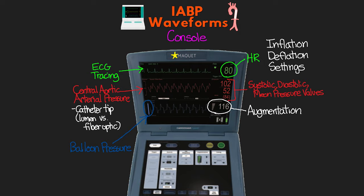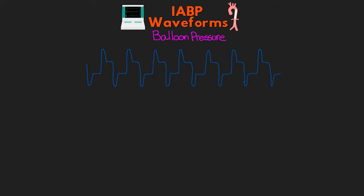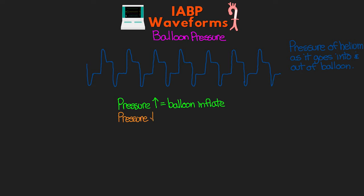Let's talk about our balloon pressure. This waveform represents the pressure of the helium as it goes into and out of the balloon, causing it to inflate and deflate. In a lot of ways, it reminds me of the pressure graph on a ventilator — it's measuring the pressure at any given time, giving us a waveform representing those pressures in the balloon over time. As the pressure increases, the balloon inflates; as the pressure decreases, the balloon deflates.